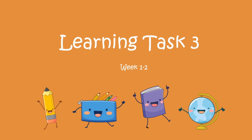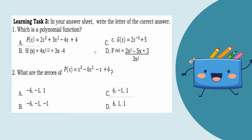Let's have Learning Tasks 3, weeks 1 and 2. Number one asks which is a polynomial function — the answer is letter A, since polynomial functions must have whole number exponents with no fractions and no negatives. For number two, the zeros of p(x) = x³ - 6x² - x + 2 using synthetic division and factoring gives letter C: 6, negative 1, and 1.